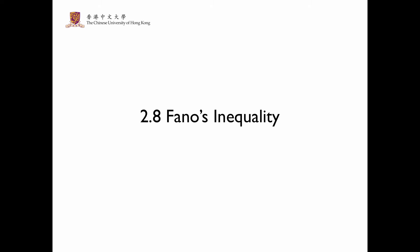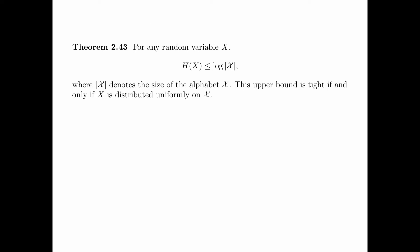In section 2.8, we will establish an inequality called Fano's Inequality, which will be used over and over again in this course. Before we establish Fano's Inequality, we first prove a very useful theorem. This theorem says that for any random variable x, the entropy of x is upper bounded by the log of the size of the alphabet. This upper bound is tight if and only if x is distributed uniformly on the alphabet.